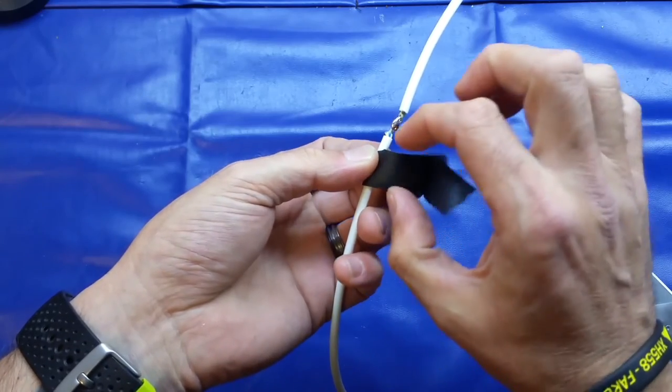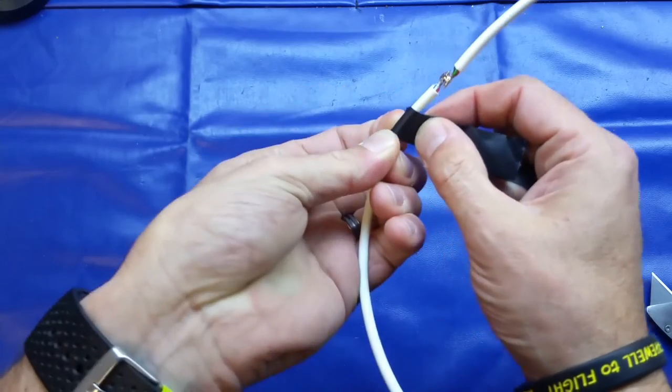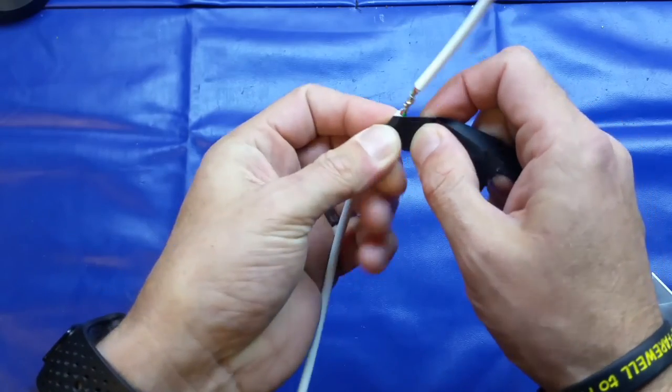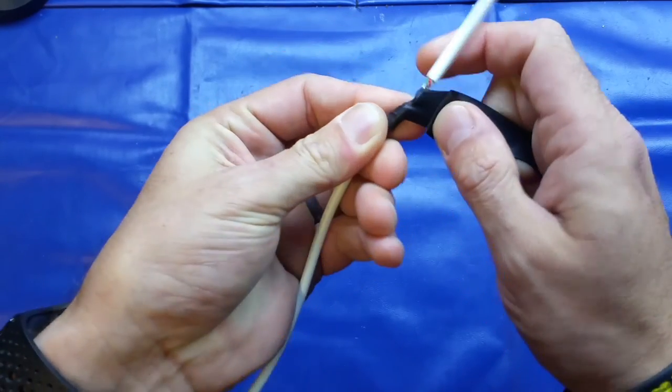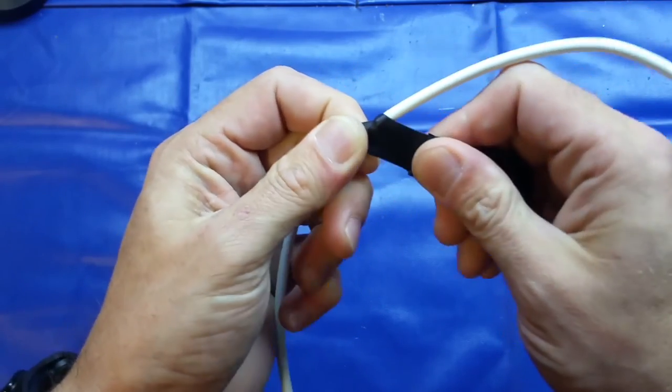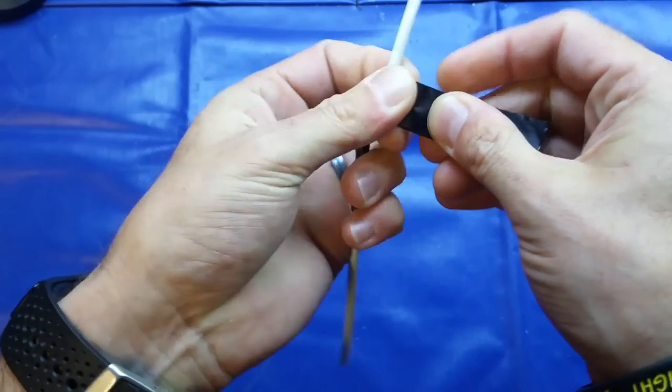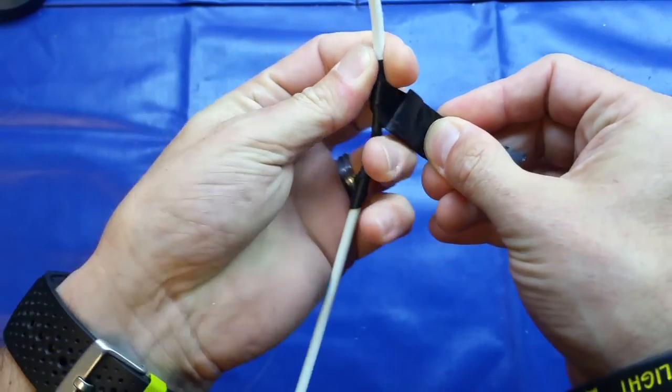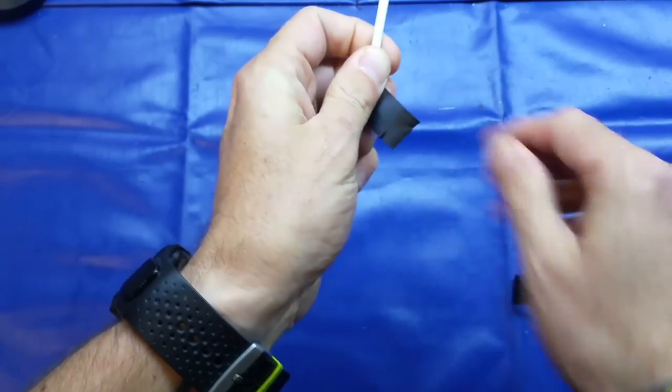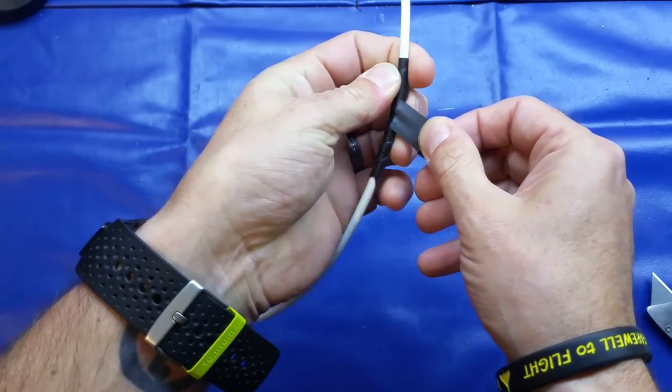Then just peel the backing tape as you go, over the top, and then the same process on the way back down. When you get to the end, you can pull off the rest of the backing tape and just hold it. You don't want to let this go because it will stick to itself.